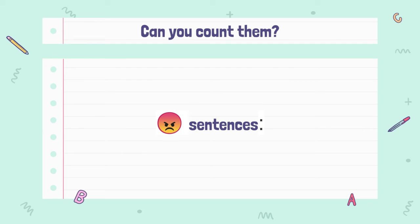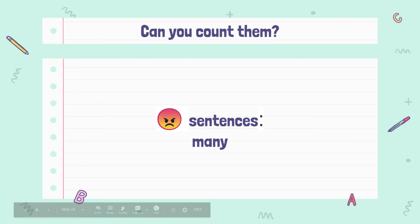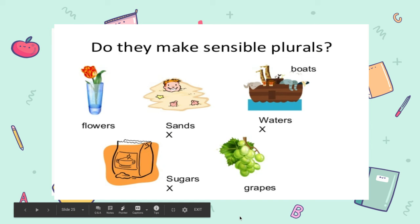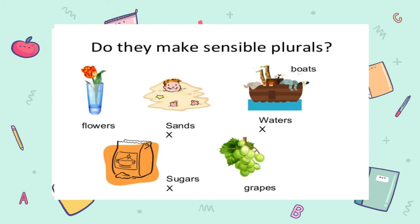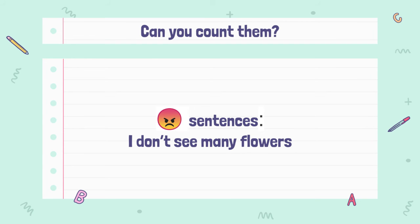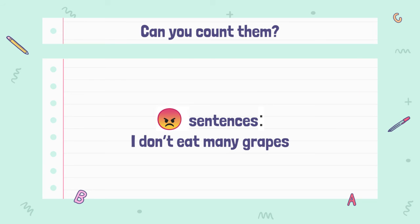Can you count them and the sentence is negative? Then you only use many — nothing else. So: I don't see many flowers. I don't see many boats. I don't eat many grapes. Not a lot of or lots of.